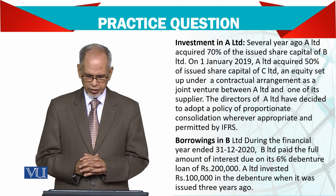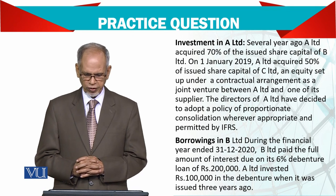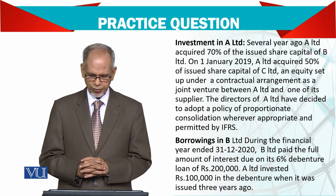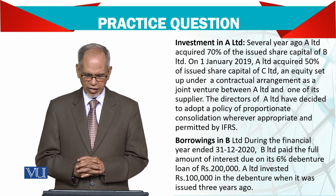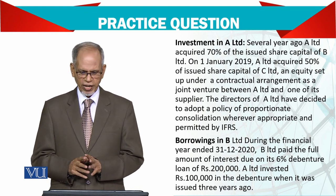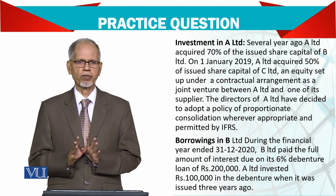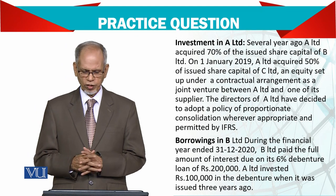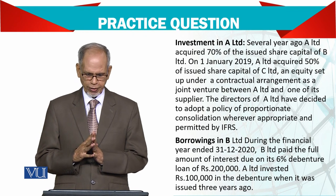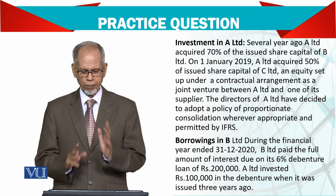During the financial year ending 31st December 2020, B Limited paid the full amount of interest due on a 6% debenture loan of 200,000. A Limited invested 100,000 in the debenture when it was issued three years ago — meaning you bought B's debentures, and on those debentures you have a fixed amount of interest annually. So A made this investment in B as a subsidiary loan, and B paid off the interest on it.